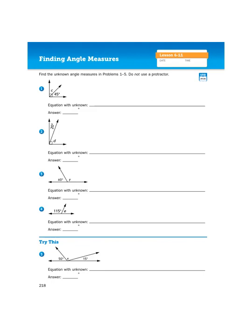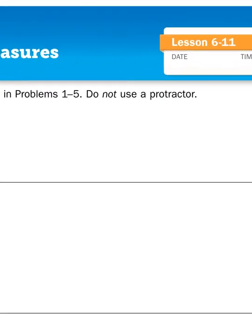I'm on page 218 in my math journal, volume 2, unit 6, lesson 11, finding angle measures. Let's read the instructions. It says, find the unknown angle measures in problems 1 through 5. Do not use a protractor.